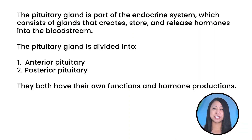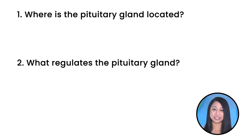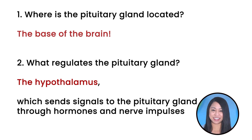Before we get into pituitary gland issues, we need to know exactly what the pituitary gland does for the body, so that we know exactly how the body is affected when the pituitary gland is not working properly. The pituitary gland is part of the endocrine system, which consists of glands that create, store, and release hormones into the bloodstream. The pituitary gland is divided into the anterior pituitary and the posterior pituitary, and they both have their own functions and hormone production.